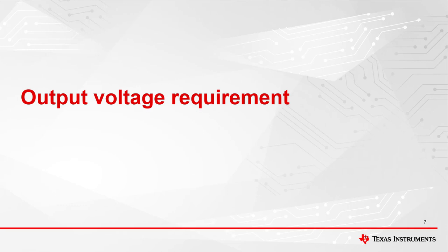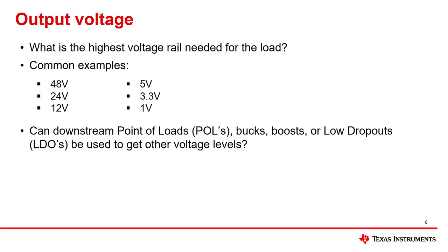Now that we have our power level defined, we can discuss the output voltage requirement. For the output voltage, the first question we always ask is: what is the highest voltage rail needed for the load? Common examples are 5 volts and 12 volts. Many designs will actually have multiple output voltages needed for different devices. For example, some devices will run off 5 volts but will also need 3.3 volts and 1 volt to power sensors and other GPIOs. In that case, we pick the highest voltage — for example, 5 volts. From there, we can use a point of load, a buck, or an LDO to get the 3.3 and 1 volt that we need. Here at TI, we would call the output voltage 5 volts, because that is the output from the DC-DC converter that converts from the PoE range to this power rail.